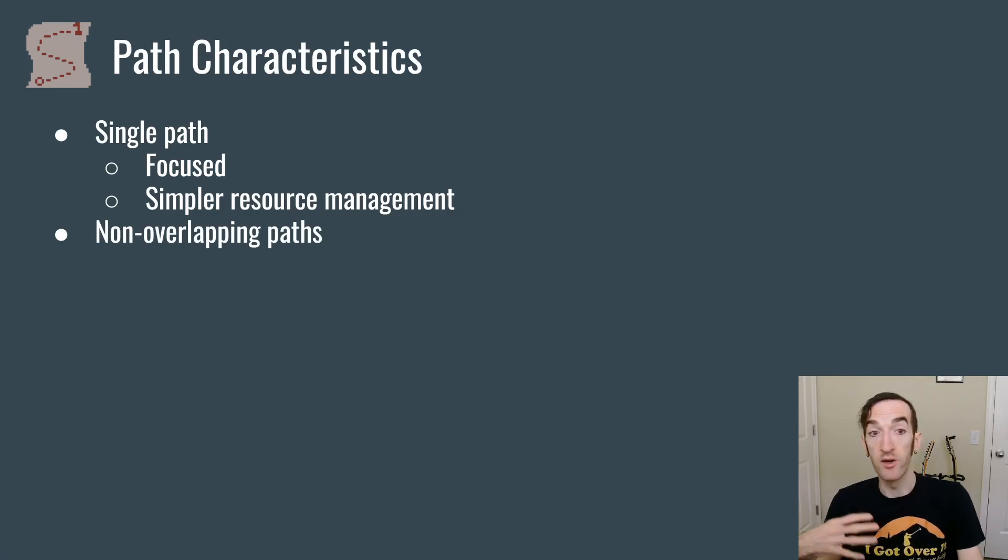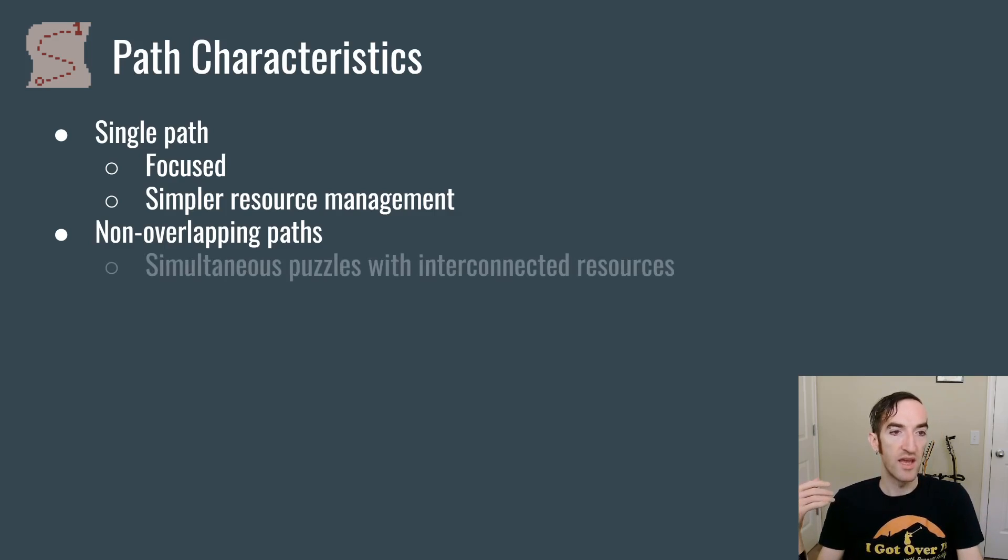If you have non-overlapping paths, that is to say paths that don't have any placements that can hit all of them, then that is going to present the player with simultaneous puzzles that are only united by the interconnected resources. If you get resources from killing monsters on one of those paths, you can then put those resources towards killing monsters on a different path, and that's the way that the paths are related, but in no other way.